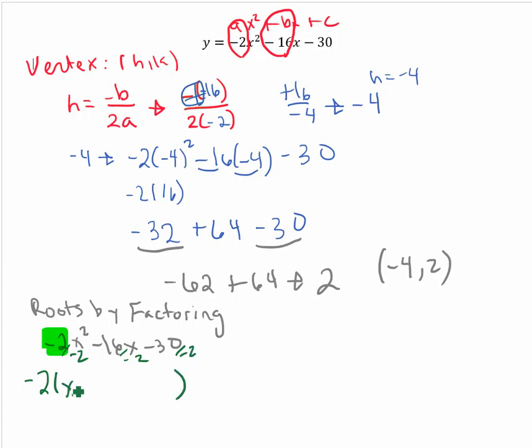We will get x squared. Negative over negative is a positive. 16 over 2 is 8x. Negative over negative is a positive. 30 over 2 is 15. Now we find the factors of 15 that add to give me 8, the positive factors of 15.